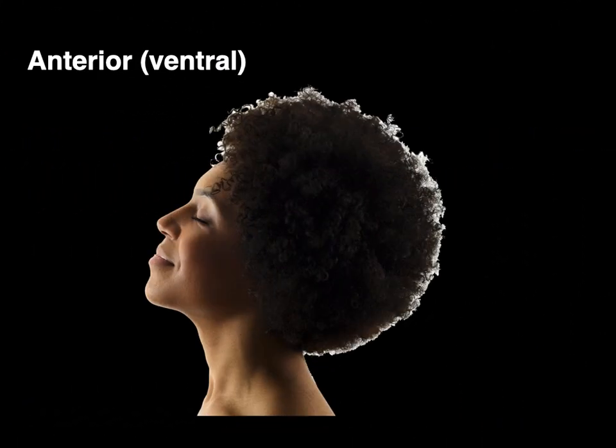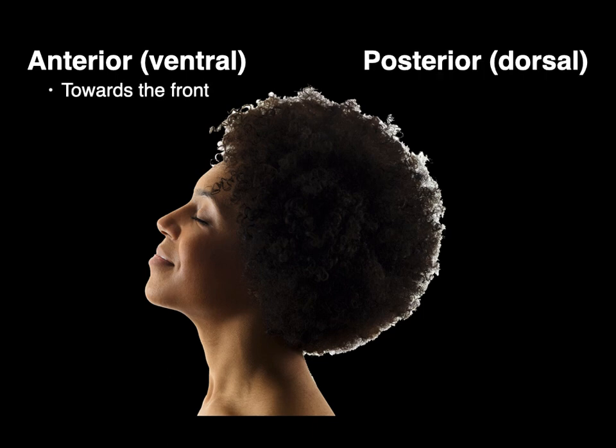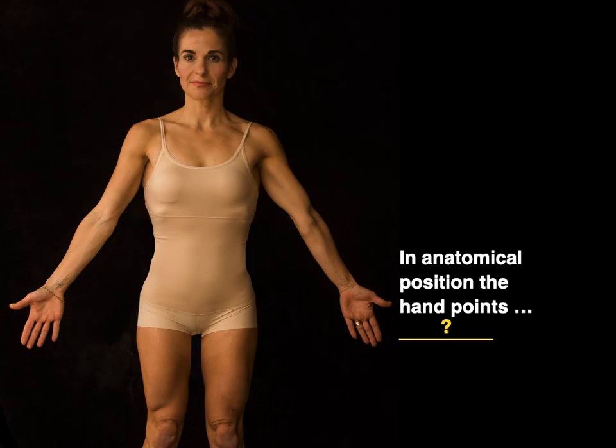The word anterior or ventral means towards the front, and posterior or dorsal means towards the back. Even though ventral and dorsal are terms that have a different meaning in embryology, in anatomy they're synonymous with anterior and posterior, posterior and dorsal.